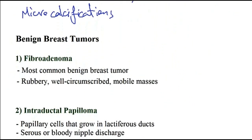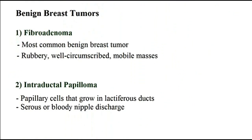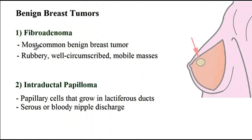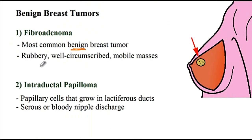The next conditions are the benign breast tumors. First, fibroadenoma is the most common benign breast tumor. It presents with rubbery, well-circumscribed, mobile masses usually two to three centimeters in size. These patients generally present with discomfort a few days before menses.